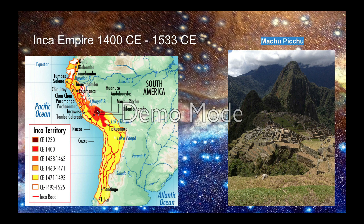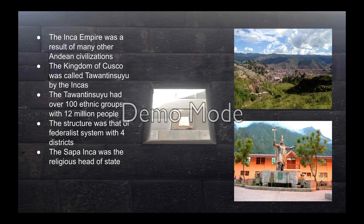The Inca Empire existed from 1400 CE to 1533 CE. As you can see, there was a series of civilizations before the Inca, including the Nazcas — just as the Aztecs and Mayans had preceding civilizations. Their most famous location is Machu Picchu, built up in the mountains. The Inca Empire resulted from many Andean civilizations. The kingdom of Cusco was called Tahuantinsuyu by the Incas, which had over 100 ethnic groups with 12 million people, requiring a federal system with four districts to control and support them.